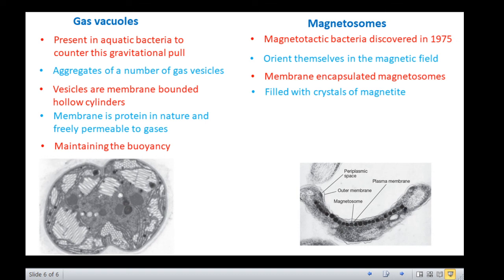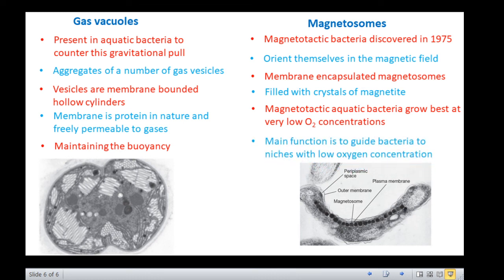Most of the magnetotactic bacteria grow best at low oxygen concentrations. Hence, the main function of magnetosomes is probably to guide such bacteria toward the sediment where oxygen concentration is lower. Magnetotactic bacteria exhibit magnetotaxis, the process of orienting and migrating along Earth's magnetic field lines as can be seen in this short video clip.